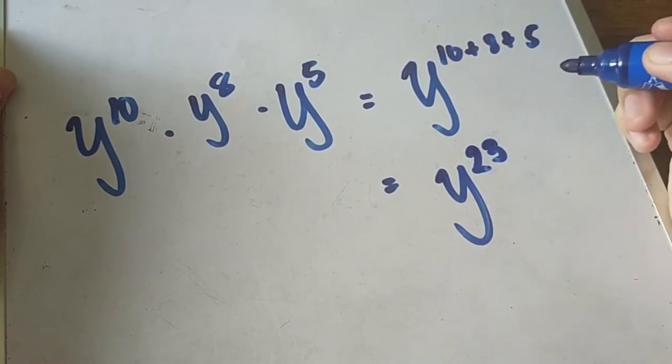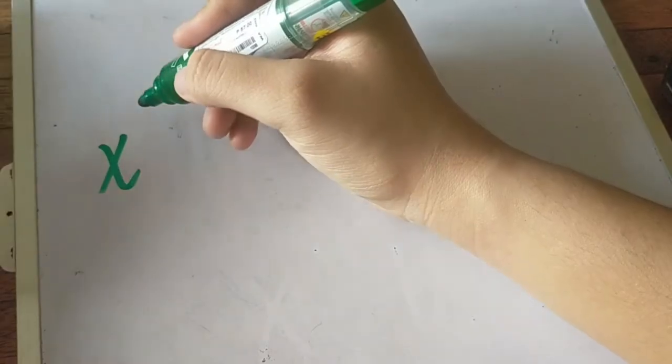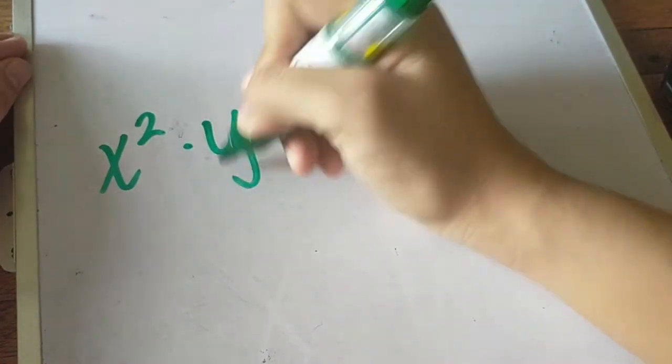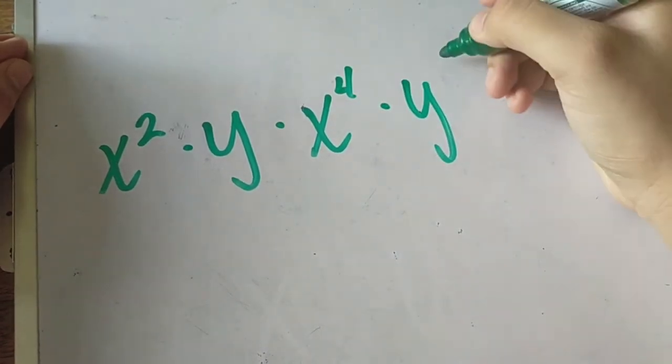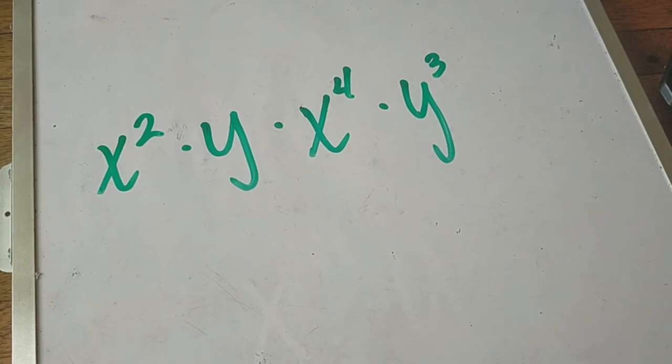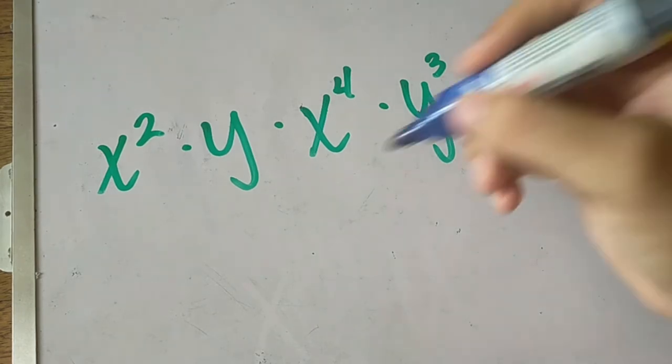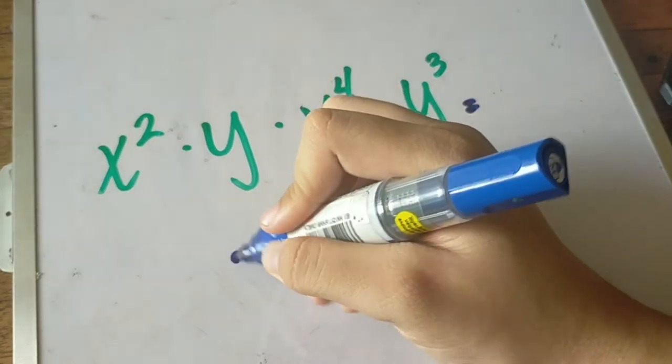What if we have two or more variables in our given example? Let's have x squared times y times x raised to 4 times y raised to 3. In this case, we have two variables present. We are not going to add all the exponents. First thing that we need to do is to copy the bases that are present in our given equation. What are present based on our expression? We have x and y.